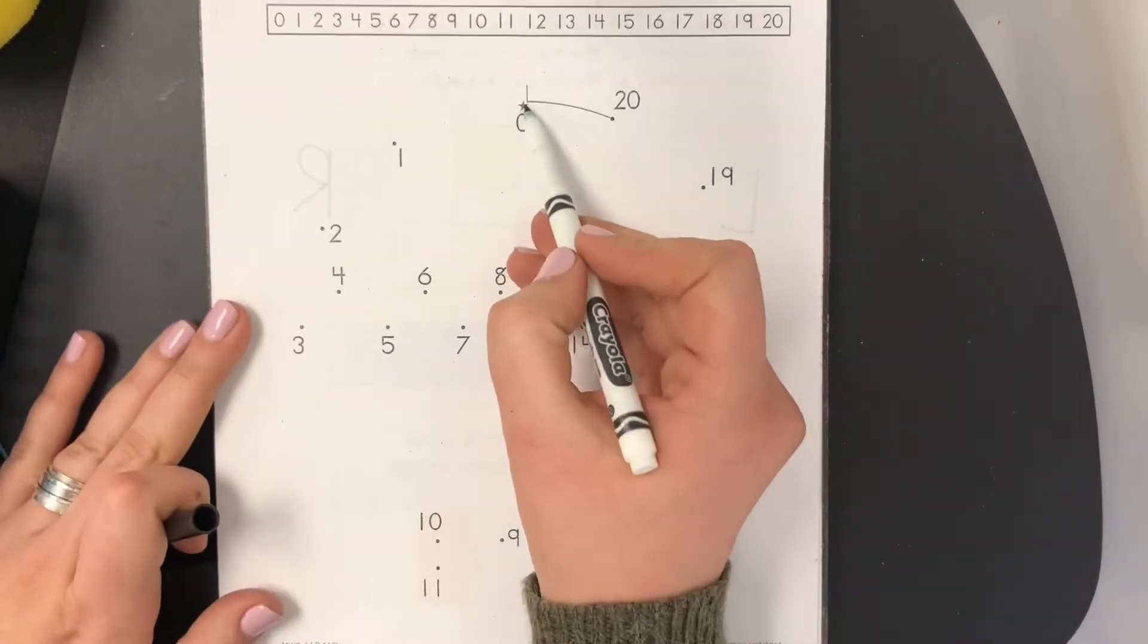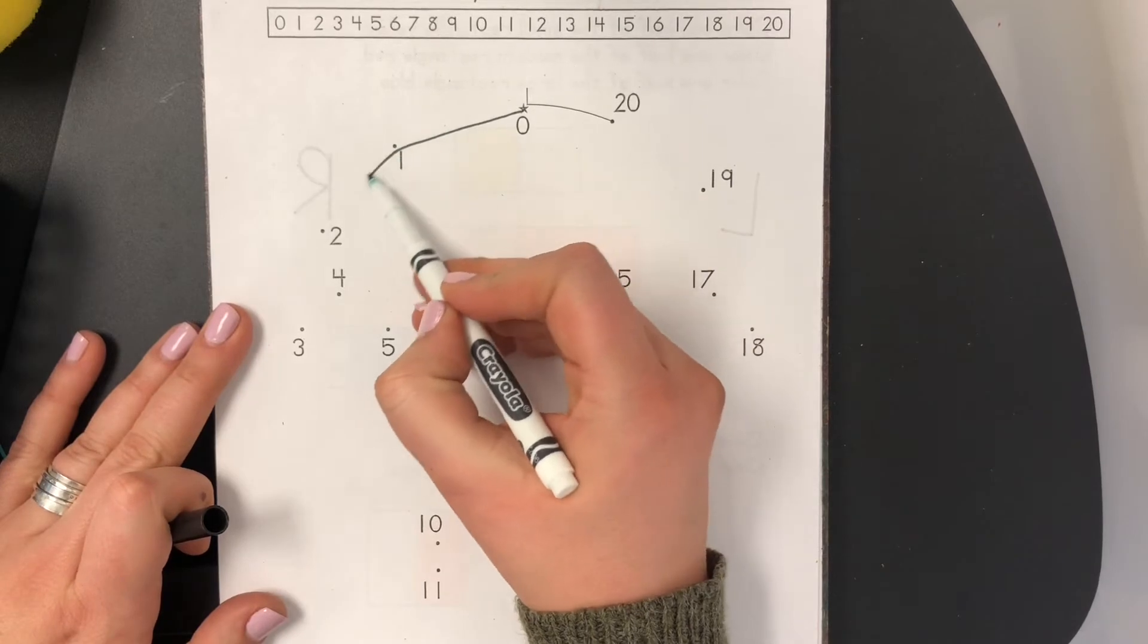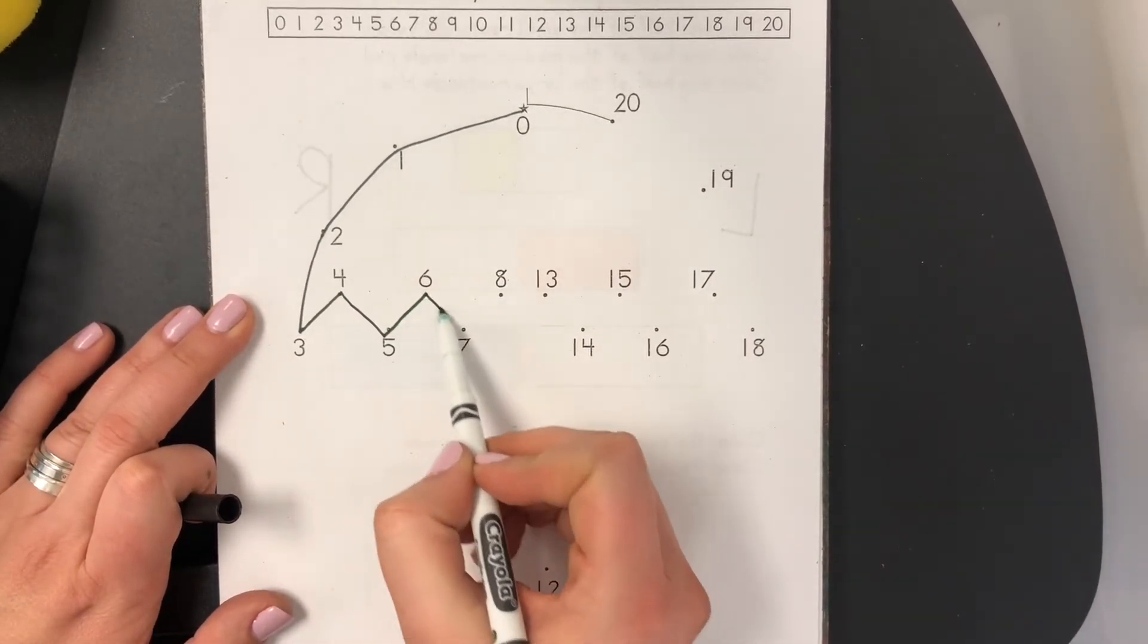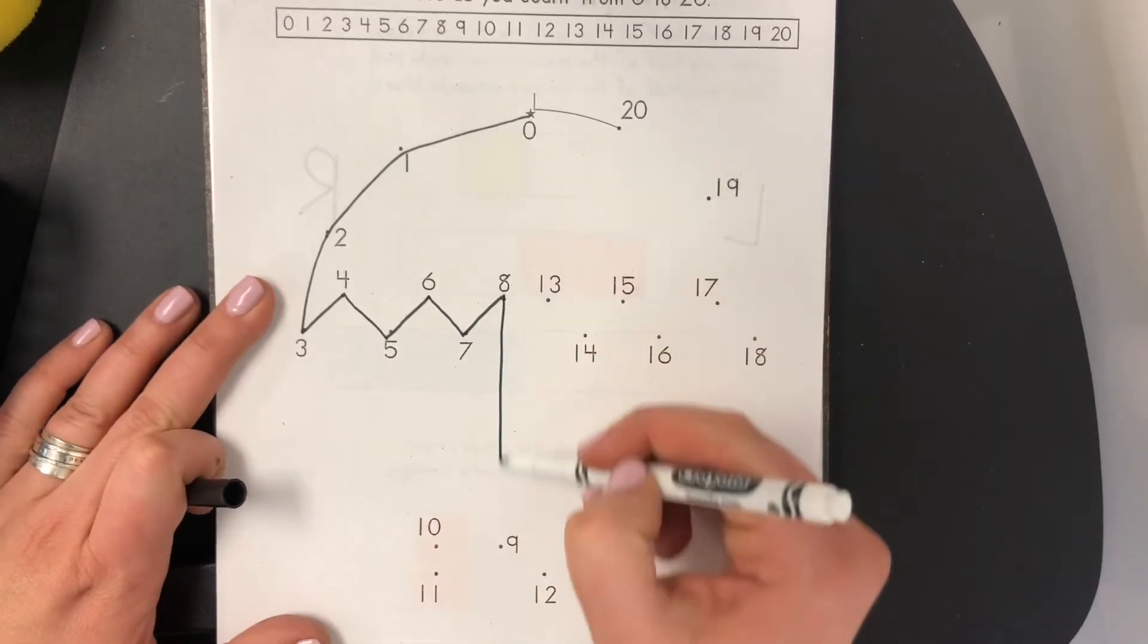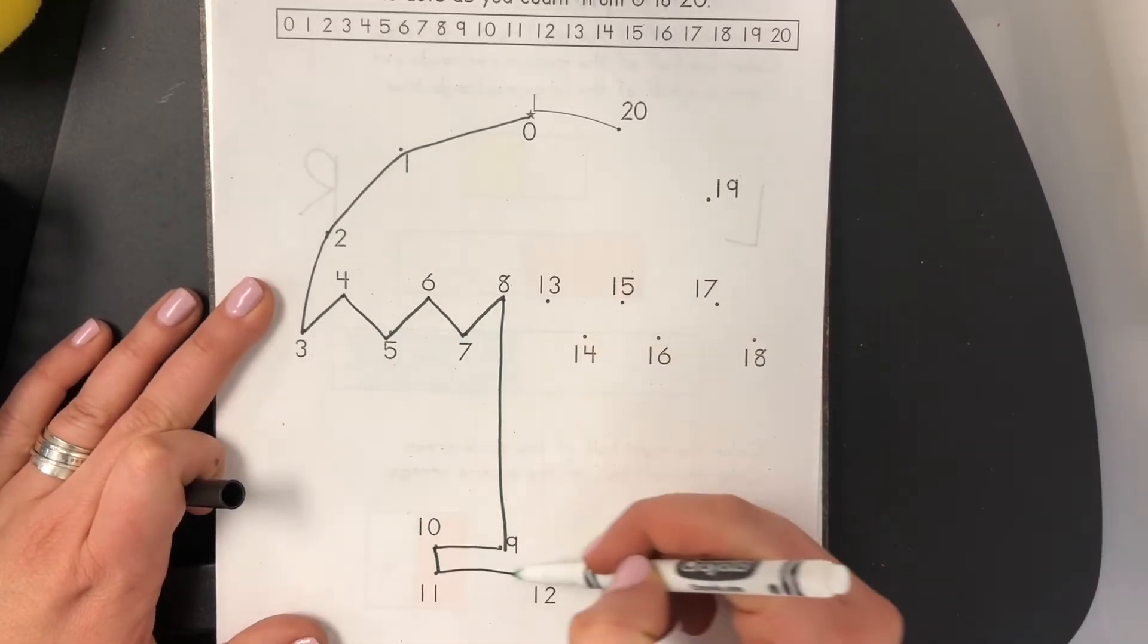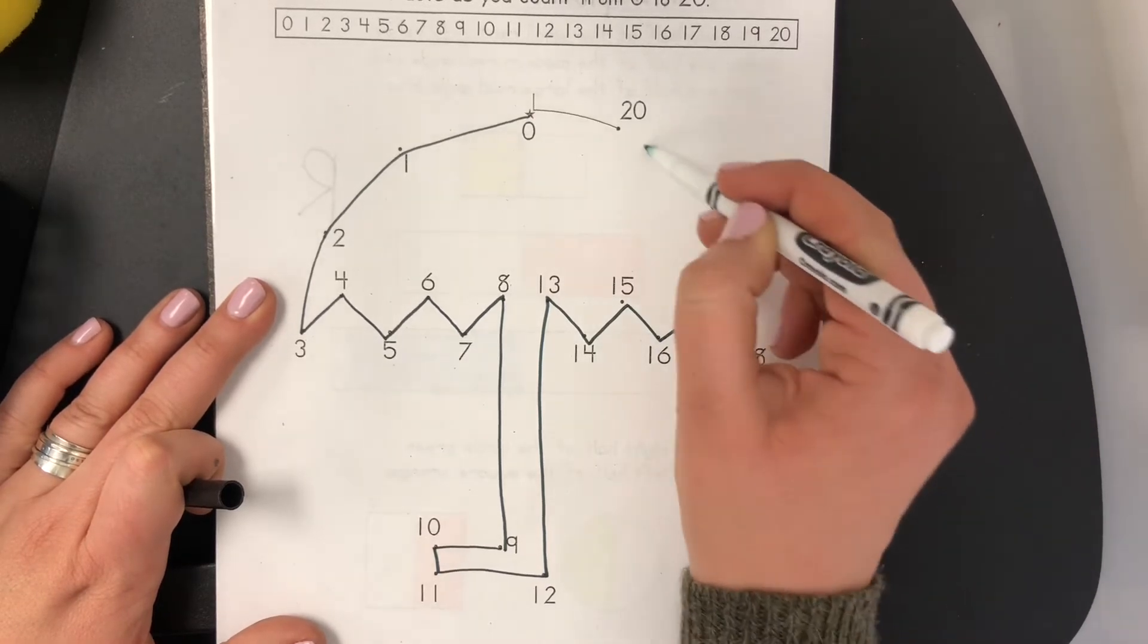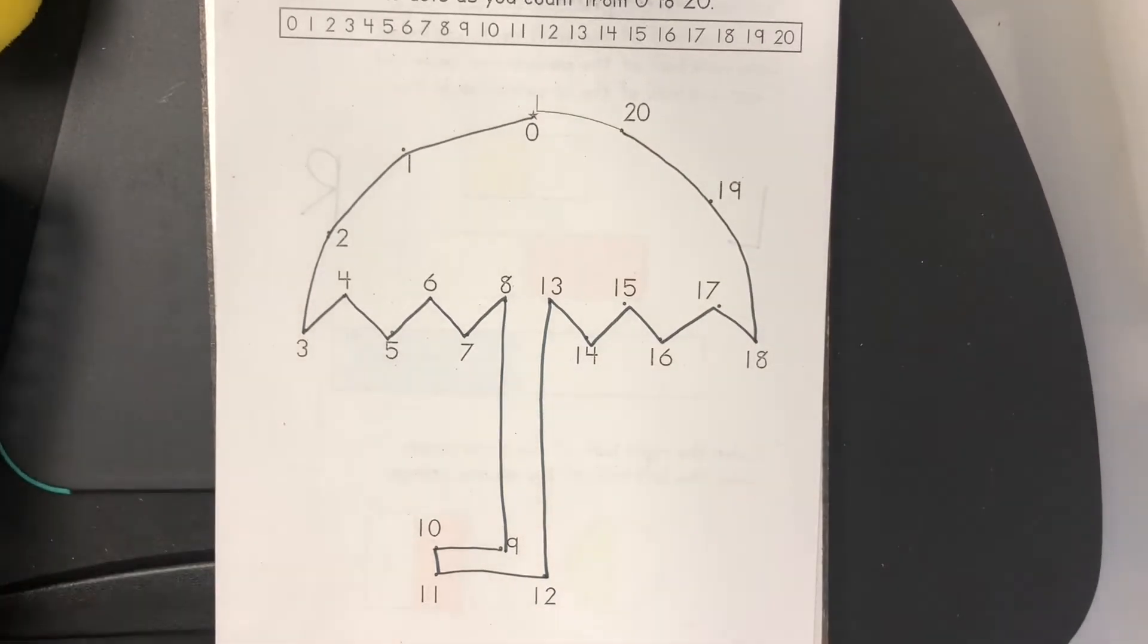So just like always we're just following in order. One, two, three, four, five, six, seven, eight.